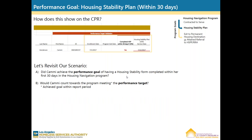How does this show on the CPR? Here is a visual representation of what this will look like on the report. Now let's revisit our scenario. Did Kami achieve the performance goal of having a housing stability form completed within her first 30 days in the housing navigation program? Yes. She was enrolled on July 1st and completed the housing stability plan on July 22nd, which is within the first 30 days. Would Kami count towards the program meeting the performance target? Yes, as the goal was achieved within the reporting period, she will be counted towards the target.